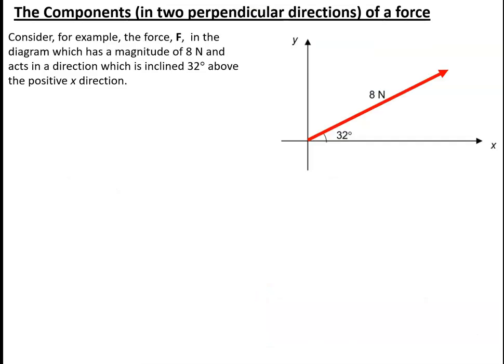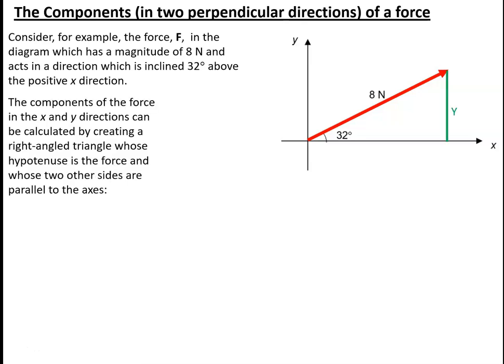To get going, let's consider a force of size 8 newtons which acts at 32 degrees above the positive x-direction, as shown in the diagram. We're going to try and split this force into a component acting along the x-direction and a component acting along the y-direction. To do that, we need to create a right-angled triangle which has the 8 newton force as the hypotenuse, and the sides x and y parallel to the x and y axes.